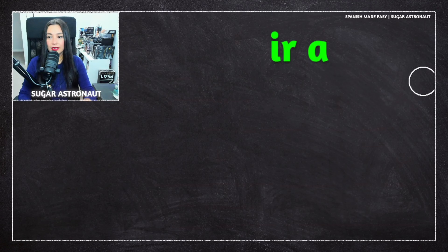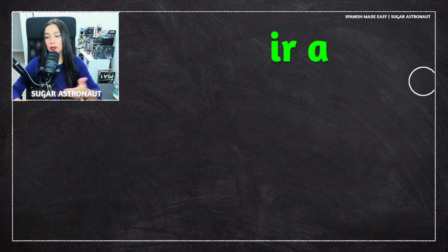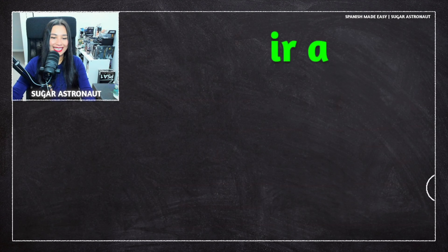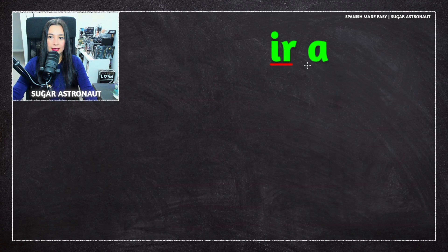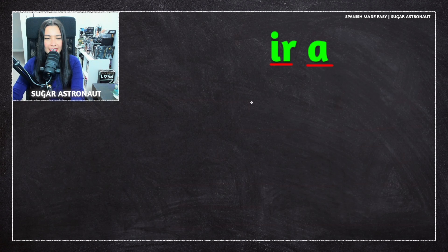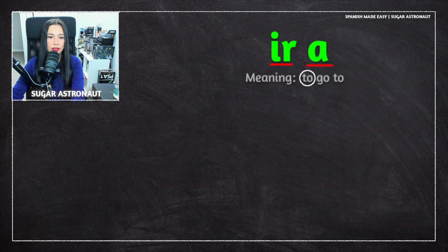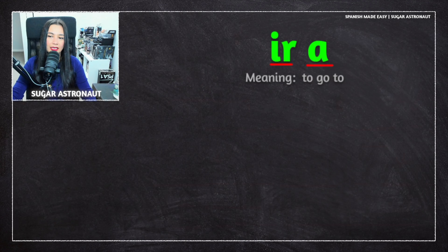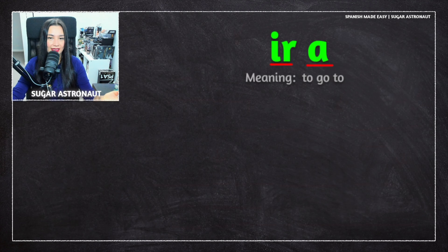It's important to learn how the verb ir works with other words, and that's why we're including 'ir a'. What does this mean? This means 'to go to' — to go to a place. So you can say 'I'm going to the store.' You can use 'ir a' in that situation.